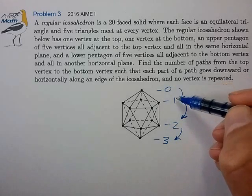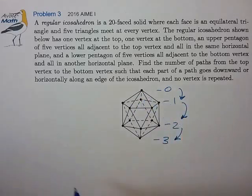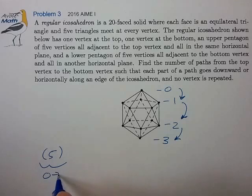So to go from level zero to level one, it looks like we can just scoot down this icosahedron in five different ways. So that's just a factor of five to get from zero to one.